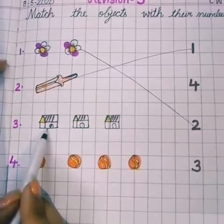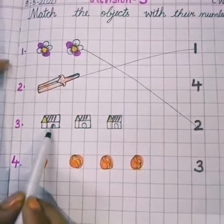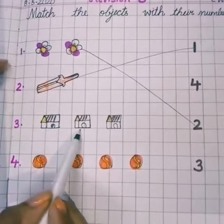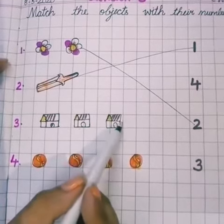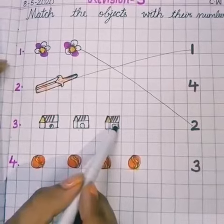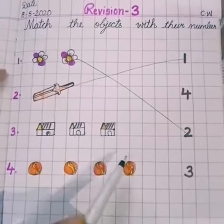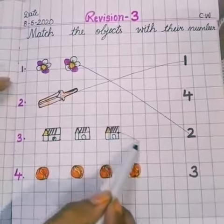What is this? Huts. Count it slowly, slowly. 1, 2 and 3. So you have to match it with 3.